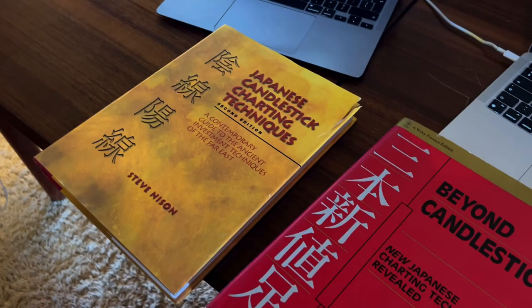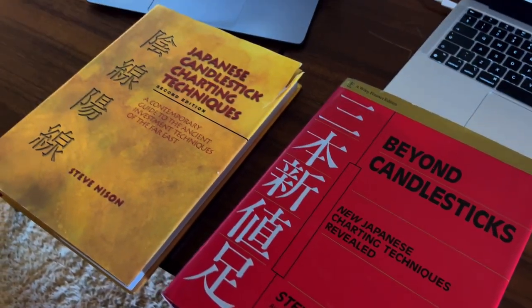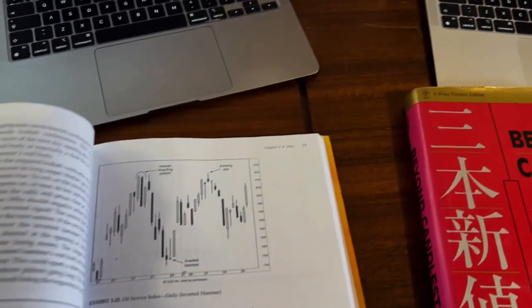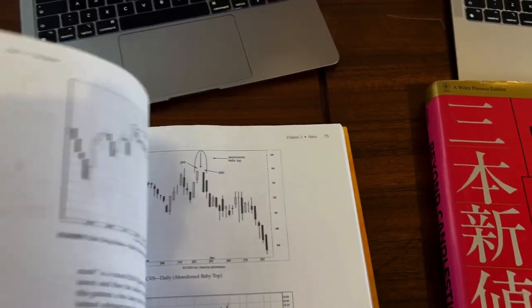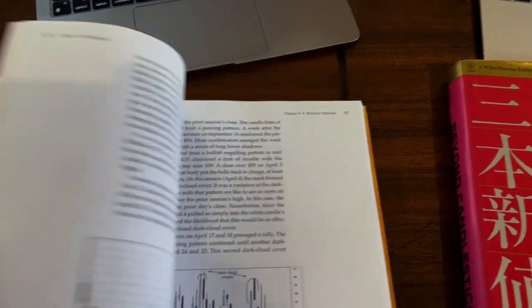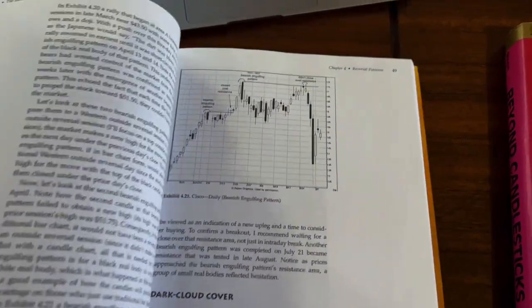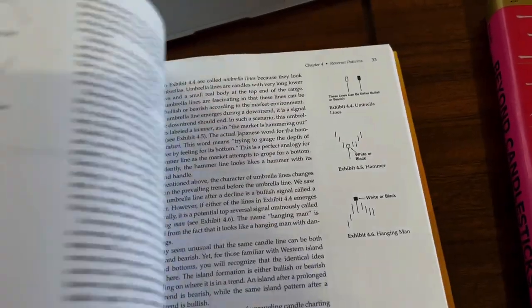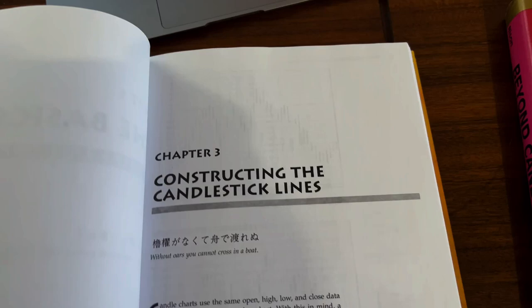If you combine that along with support and resistance, Fibonaccis, and trend lines, you get a really powerful method of trading the currency markets, the stock markets, metals, indices—you name it. You can trade anything with candlestick charting techniques.